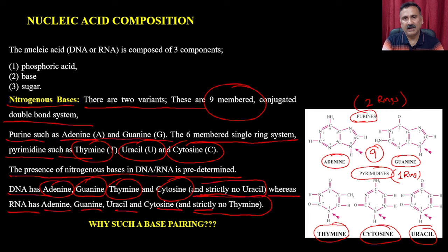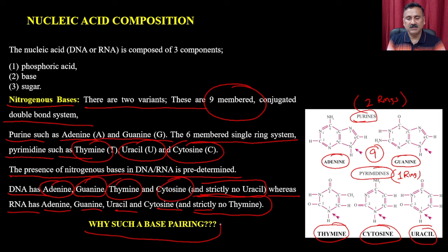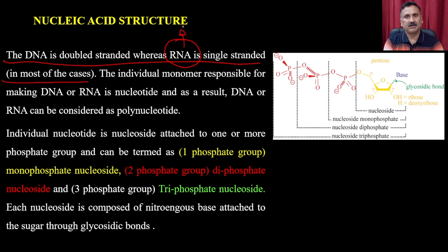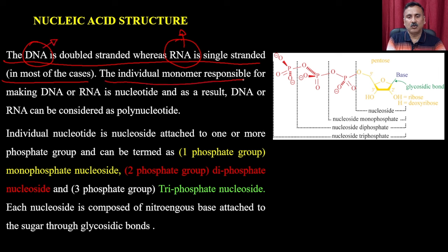The question arises: which bases make pairs with which others? What is the rule about base pairing between these nitrogenous bases? DNA is double-stranded whereas RNA is single-stranded in most cases. RNA can be double-stranded in some plant viruses and other special organisms. The individual monomer responsible for making DNA or RNA is a nucleotide, so DNA or RNA can be considered a polynucleotide molecule — they are polymers.